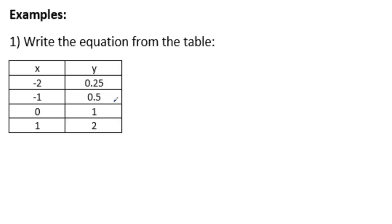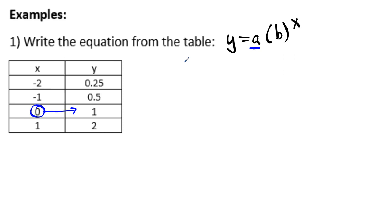Write the equation from a table. We're given this table and we need to write the exponential equation in this form. We want to first find our Y-intercept, which is when the X value is zero. Looking at the table, that A value is going to be 1. Halfway there. Now we've got to find the B value — what we're multiplying from one Y value to get to the next.